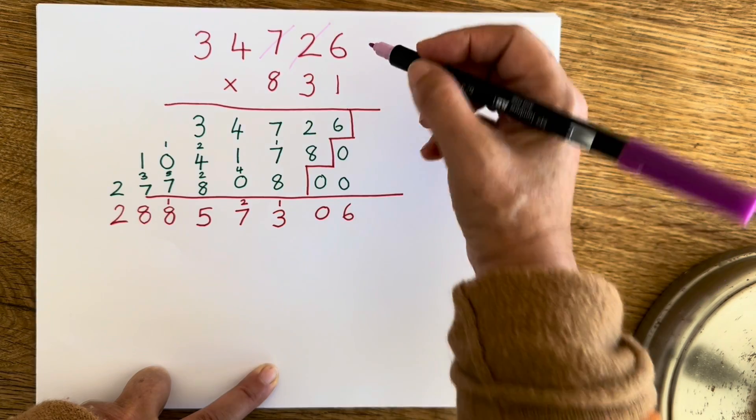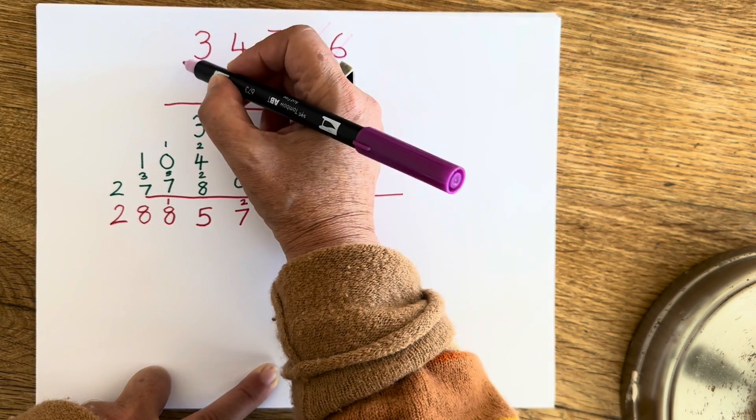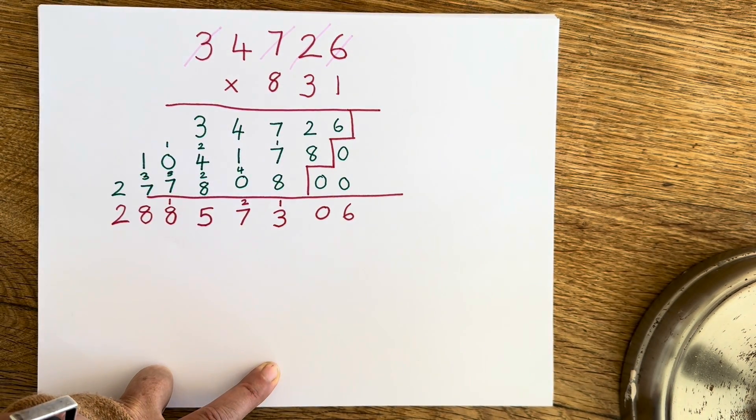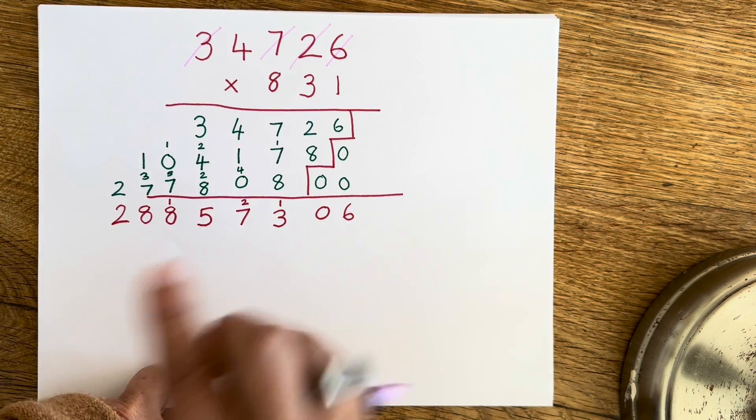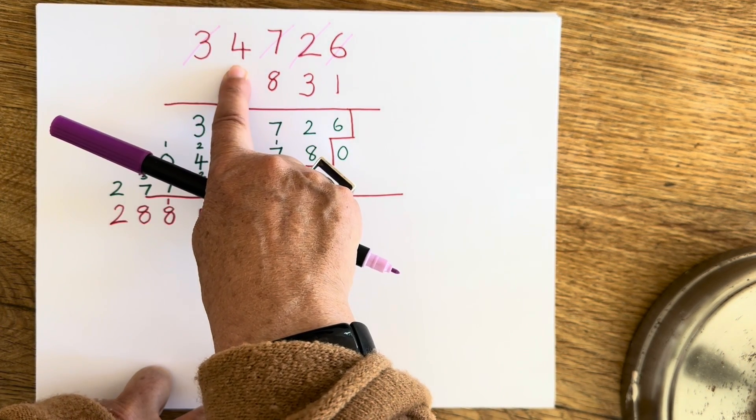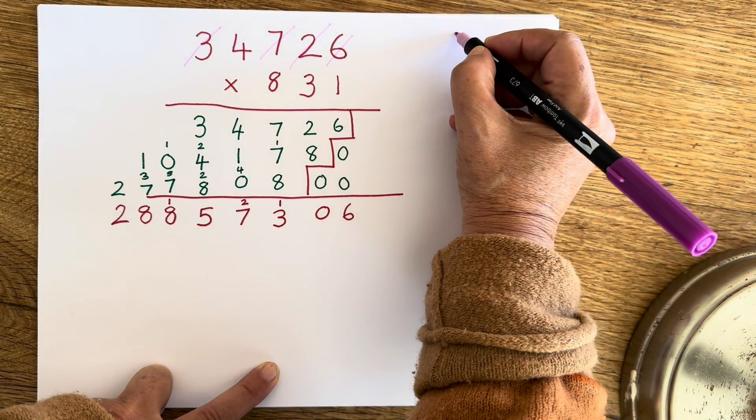And then if I look again, I can see another pair. I can see six and three, so I'm going to cross those out and cast them out again. And that's actually just left me with a four, so I'm going to move that four and pop him here.